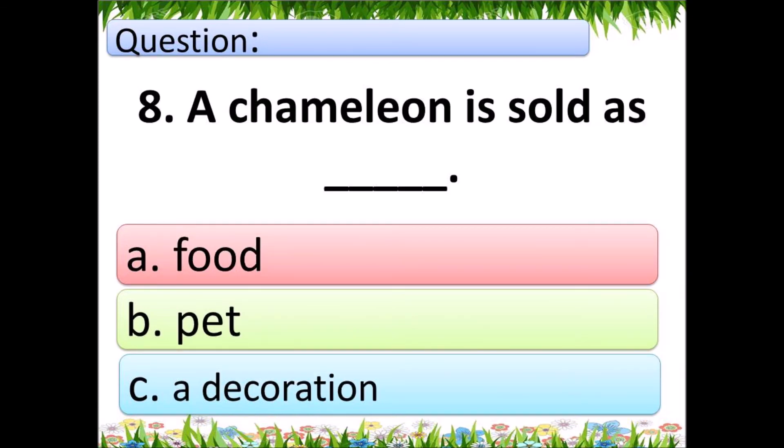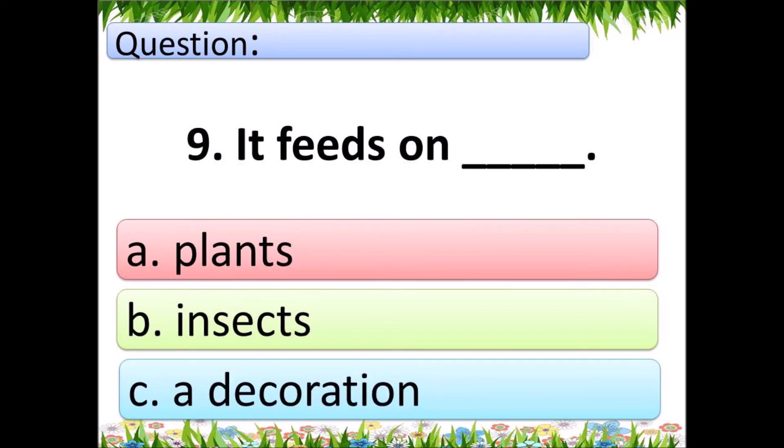Question 8: A chameleon is sold as what? A: food, B: pet, C: a decoration. Question 9: It feeds on what? A: plants, B: insects, C: a decoration.